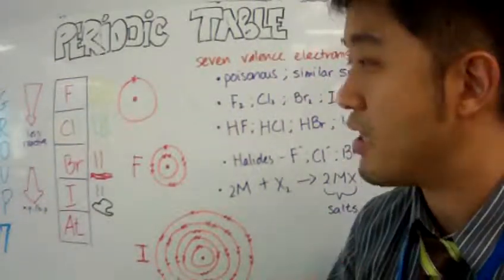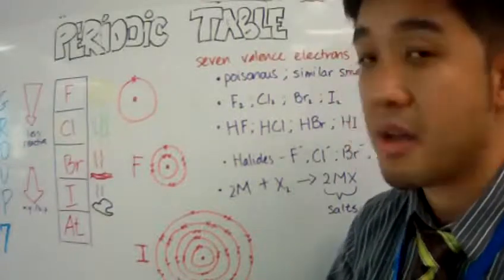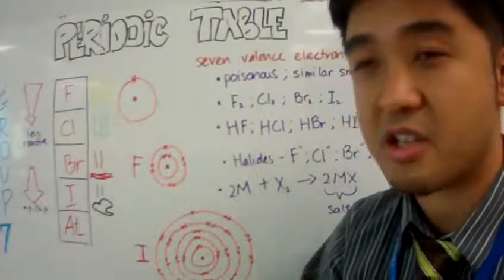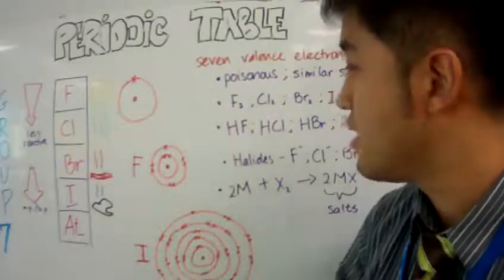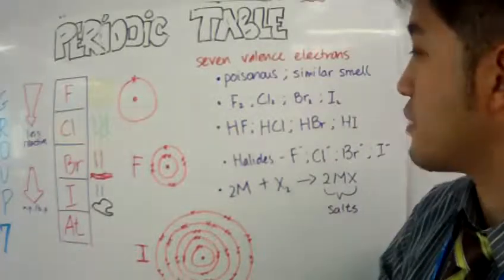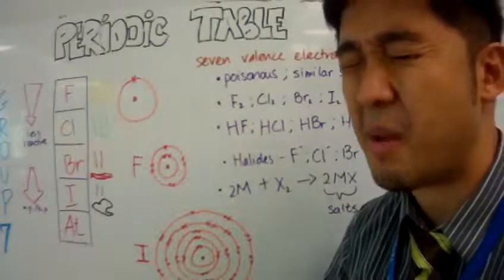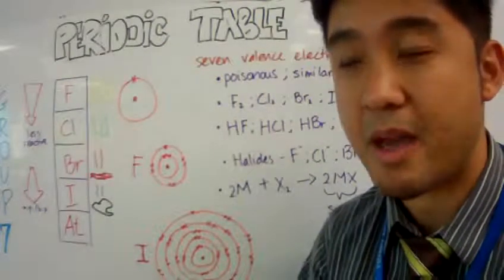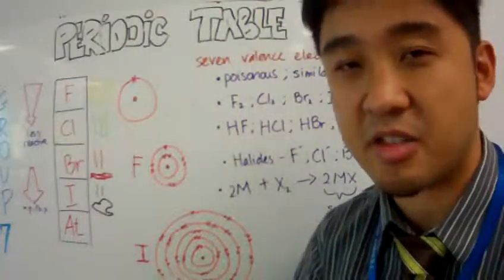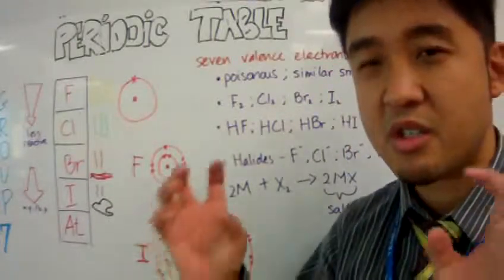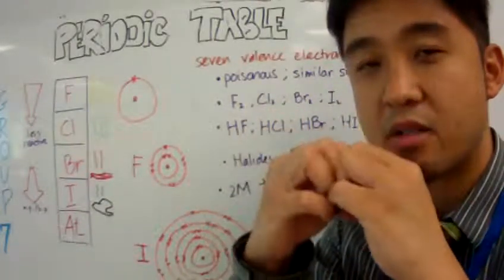Some of the similar properties of halogens is that they are poisonous and have very similar smells. Usually halogens, when they bond with each other, come in a diatomic manner. Di means two, atomic means atoms, so you have two atoms that join together to form